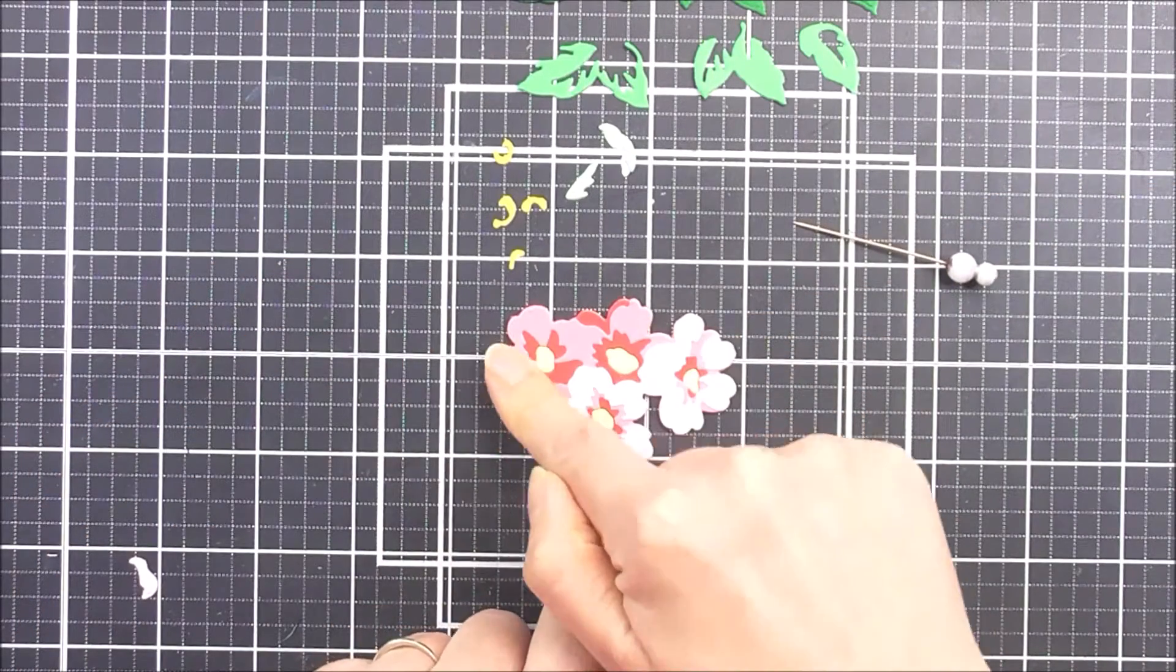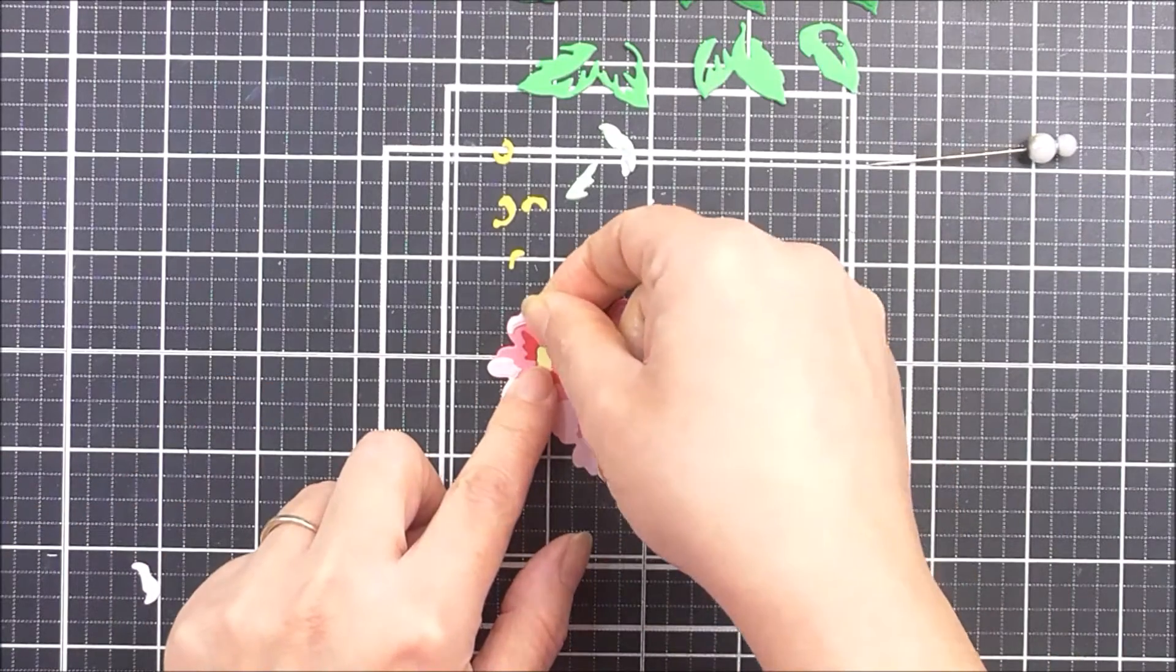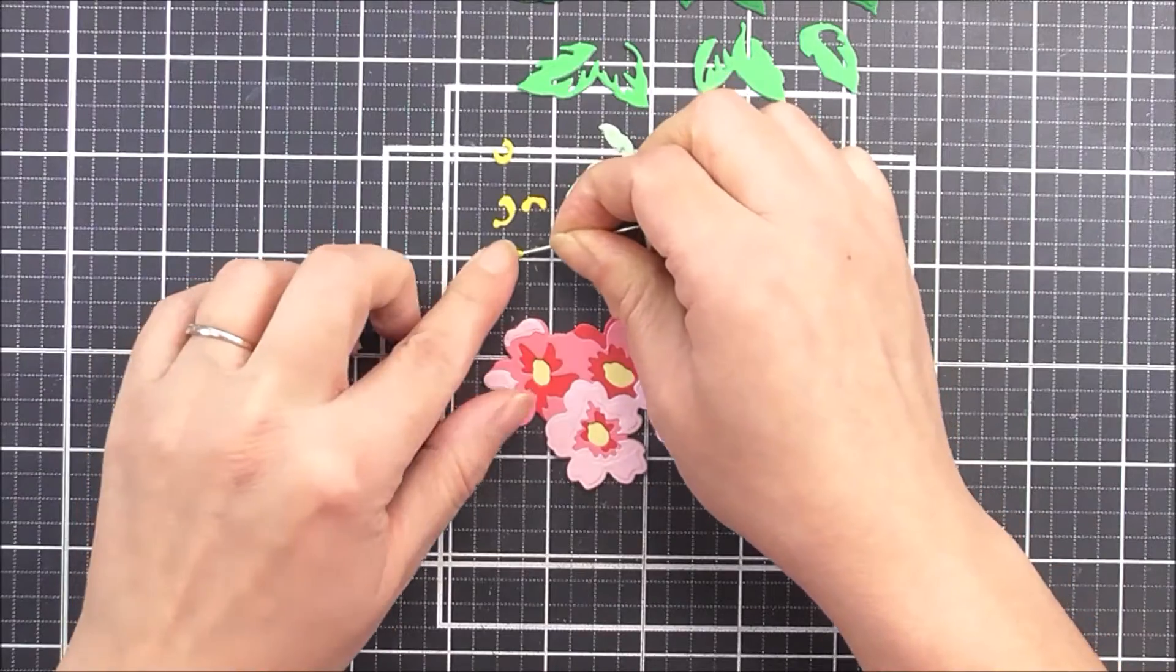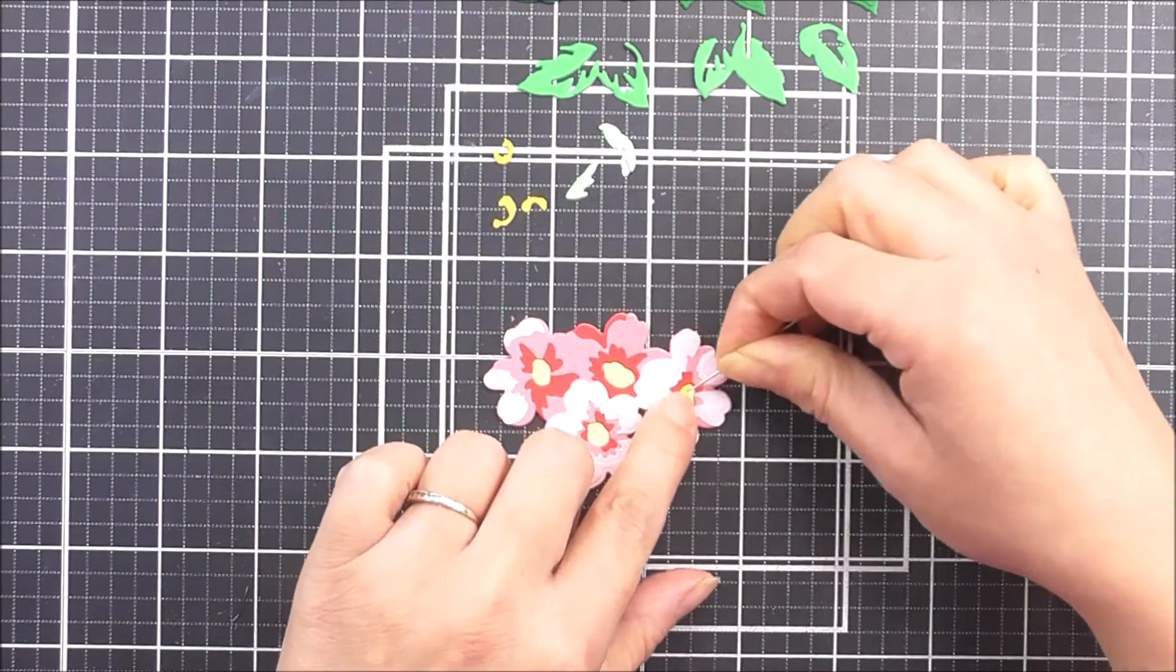Now we just have two little pieces to add to this flower and they're just going to go on the edges of the petals to create that beautiful highlight. I used frosty pink cardstock for that.